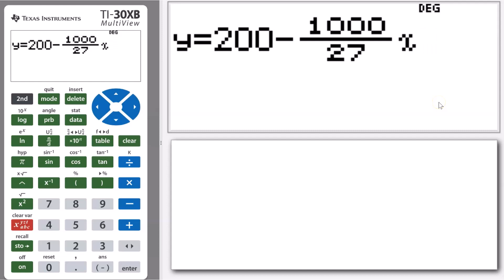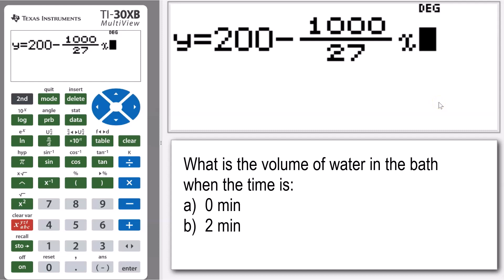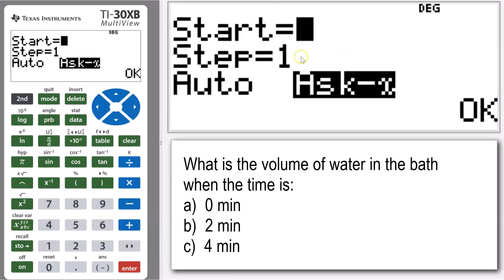Now the first part of my question: we want to find what is the volume when the time is equal to zero, two, and four minutes. So I'm going to press enter just to apply that function to the table, and then I can set up my parameters here.